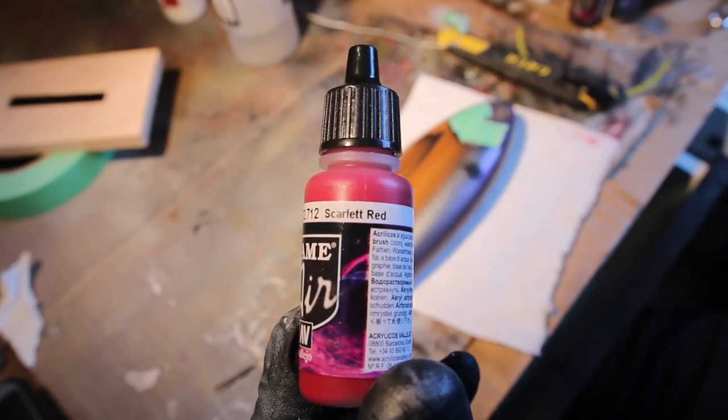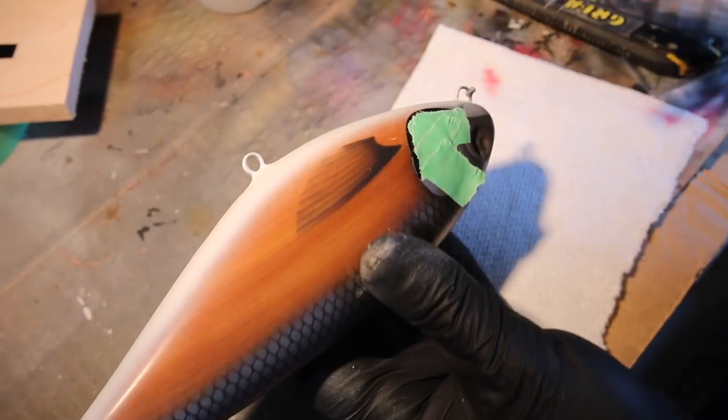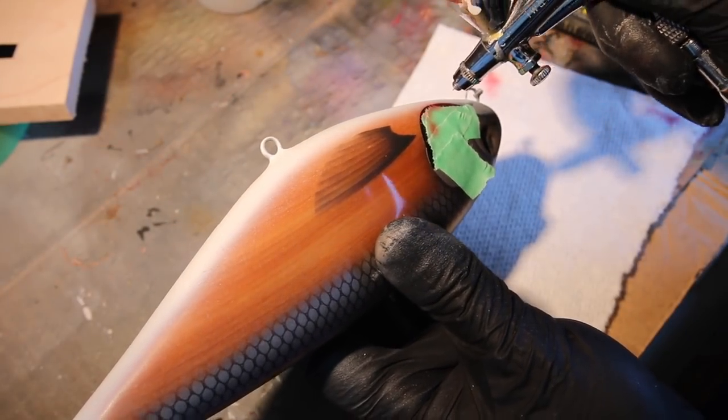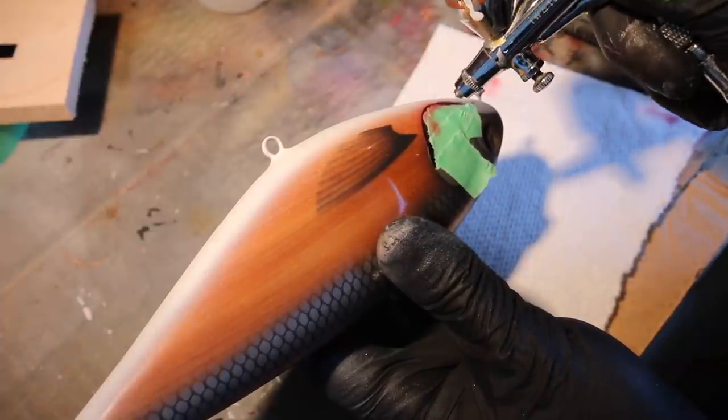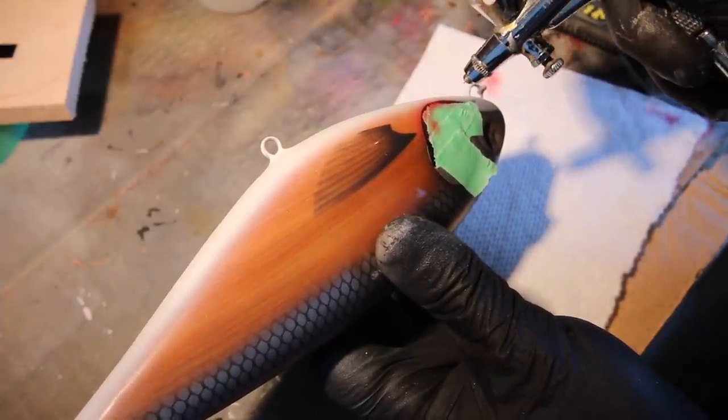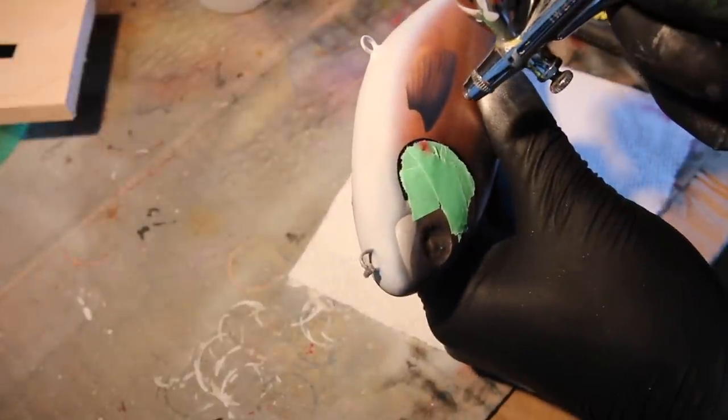Originally I was not going to do this but when I was looking at this lure I thought to myself, you know what, I need some blood effects on this one. So I just decided to mask the gill plate area and add some blood effects.